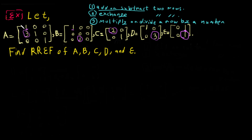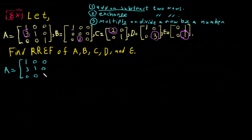As we saw in the previous video, when we do RREF we begin from the top. Here we have a 1, so we go down — the element below must be zero. Let me write matrix A again: it is 1, 0, 0 / 0, 3, 0 — wait, not zero, it's 1 — so 0, 1, 0 / 0, 0, 1.